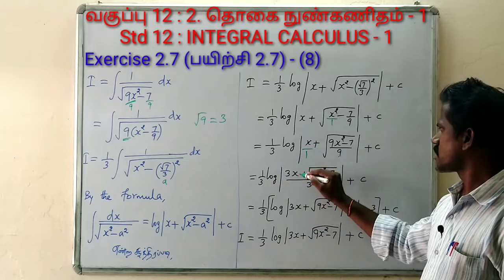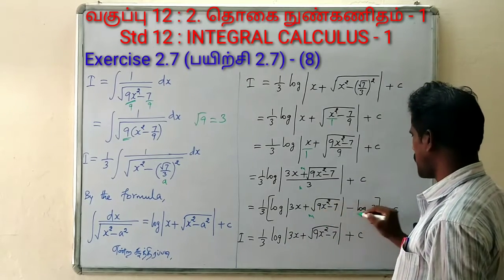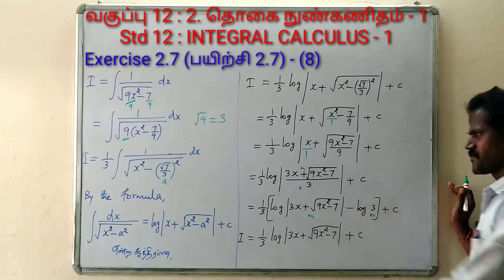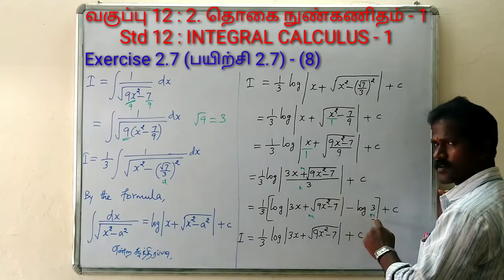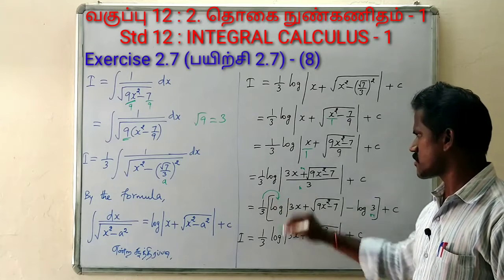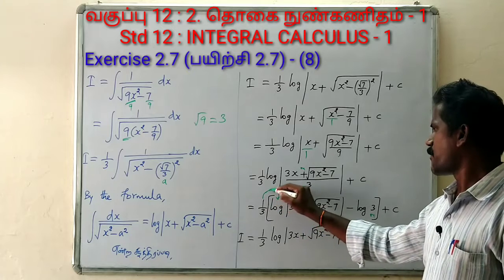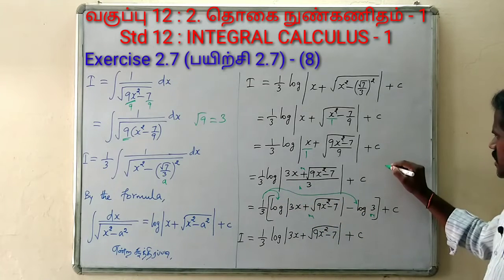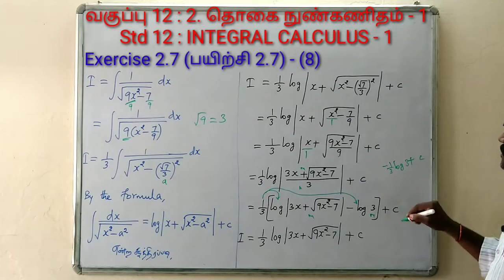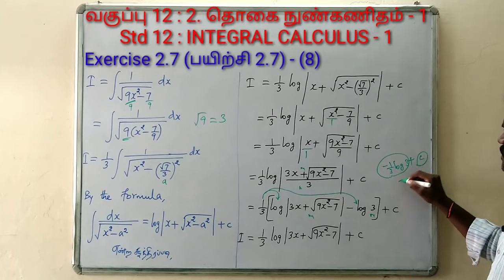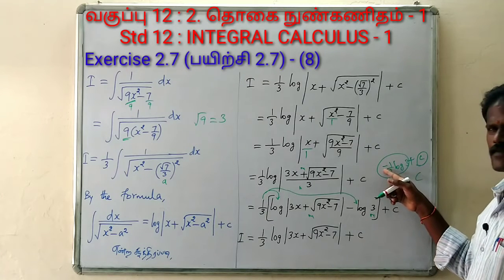What we have done is 1 by 3 log m by n, using the formula log m minus log n. So the result is: log of 3x plus root of (9x² minus 7) minus log 3, all multiplied by 1 by 3. Final answer: (1/3) log(3x + √(9x²-7)) + C.